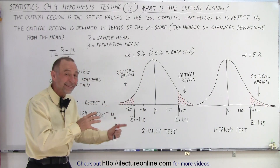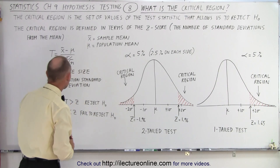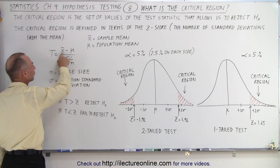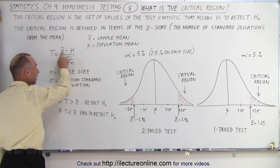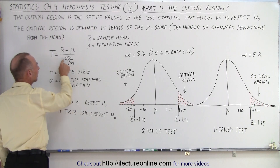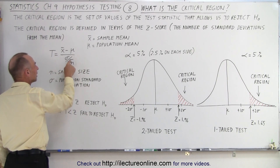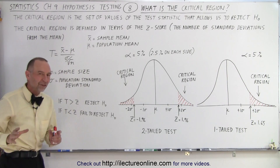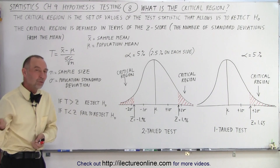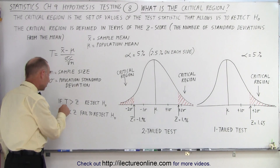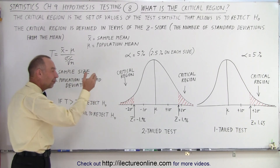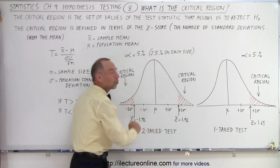Here is the equation to calculate the test statistic. It equals the difference between the mean of the random sample and the mean of the population, divided by the standard deviation of the population divided by the square root of the sample size. We then make a decision to reject or not reject, depending upon the size of the test statistic relative to the Z-score at the edge of the critical region.